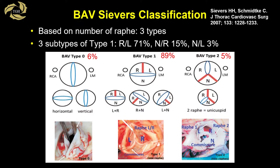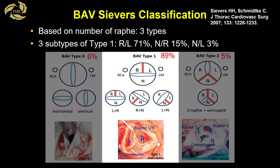Though several classification systems describe the bicuspid valve, the most often used is the Severs classification. This categorizes the bicuspid valve into three subtypes based on the number of raphae present: Type 0, no raphae, 6 percent; Type 1, one raphae, 89 percent; and Type 2, two raphae, 5 percent, which is often considered a unicuspid valve. Type 1 is the commonest and is further subdivided by the spatial position of the cusps into left-right coronary cusp fusion at 71 percent, right non-coronary cusp fusion at 15 percent, and non-left coronary cusp fusion at 3 percent.